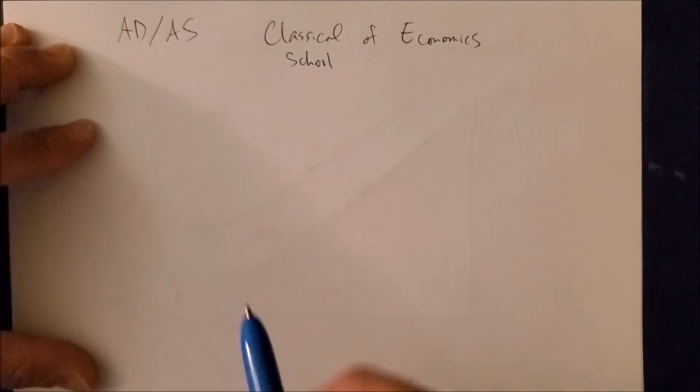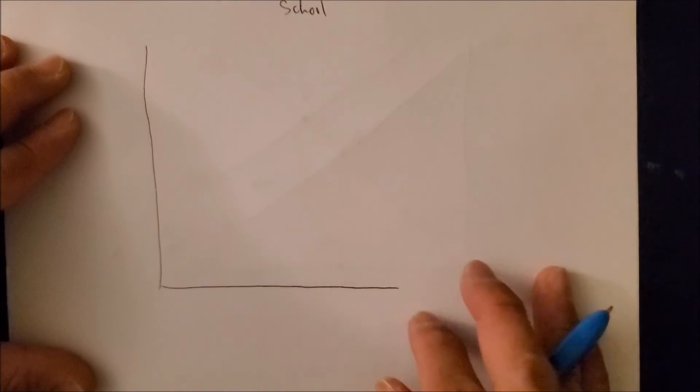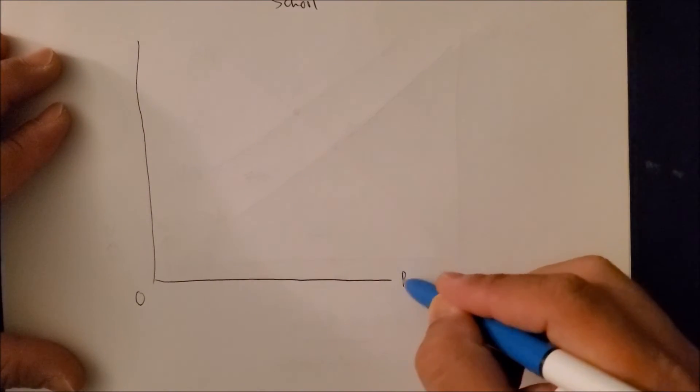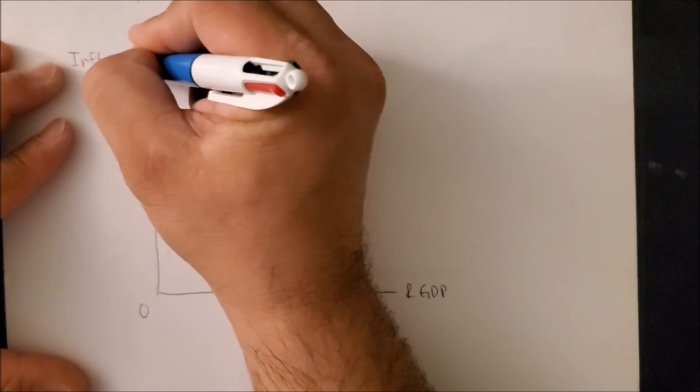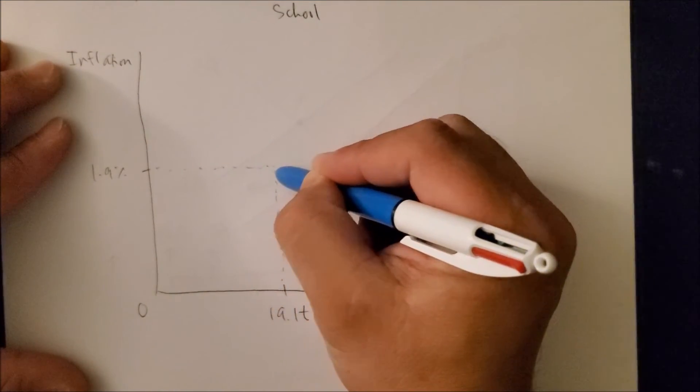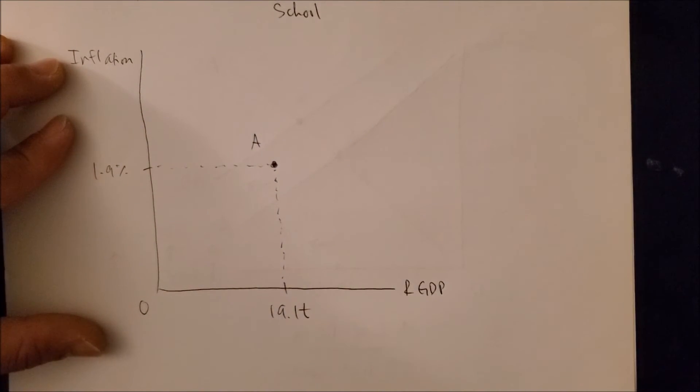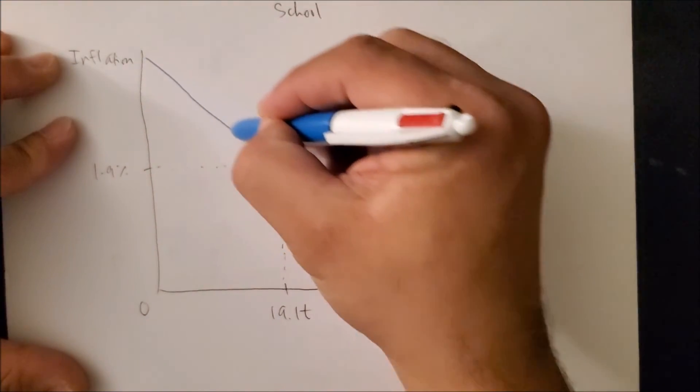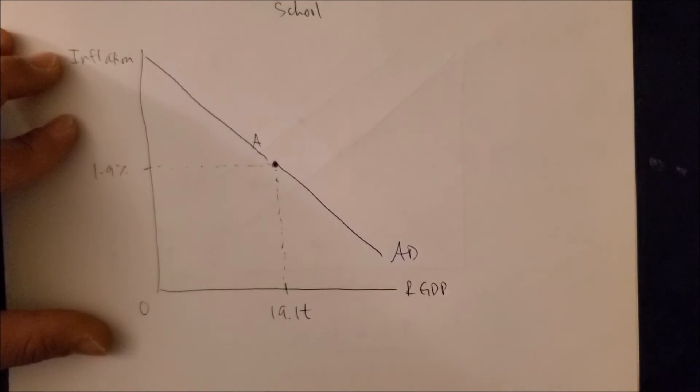And to be able to visualize this, we need to draw again our AD-AS curve, where we have zero on the x-axis. We have real GDP, we're using 19.1 trillion dollars. On the y-axis we're using inflation, price level at 1.9%, and again we have our point A where both of these numbers meet, point A. So for many classical economists, they don't really believe much in the power of AD.